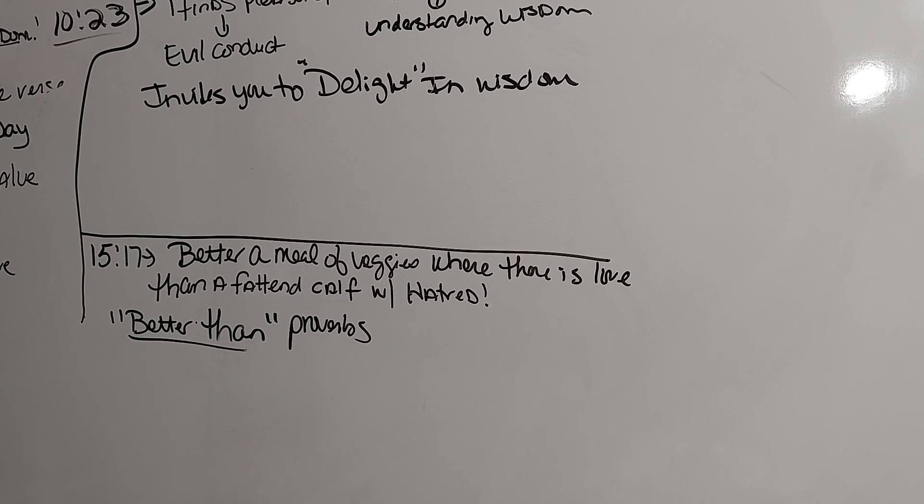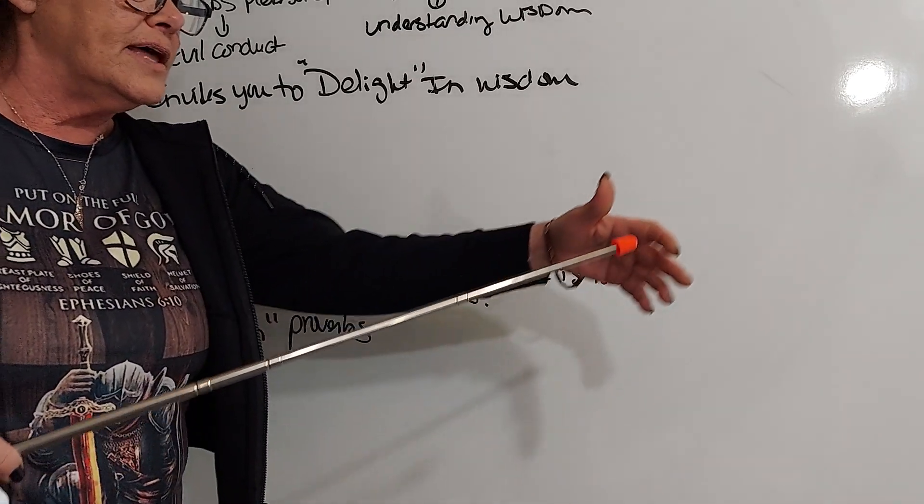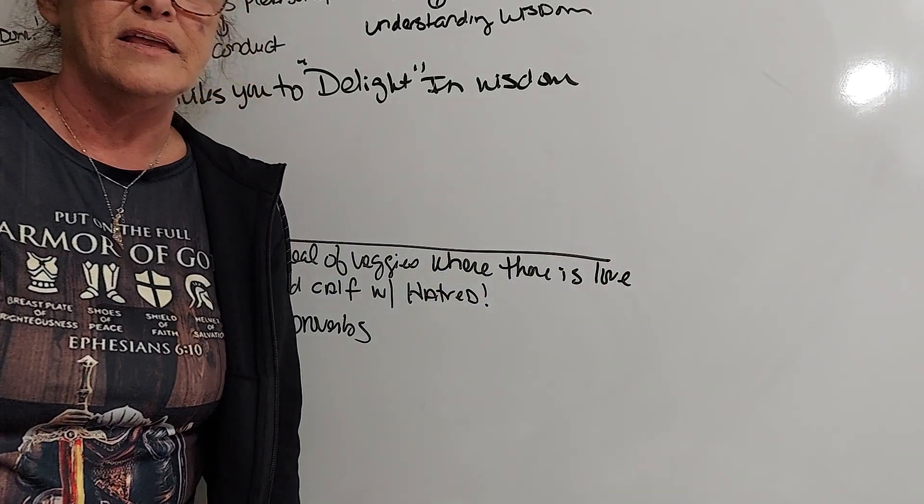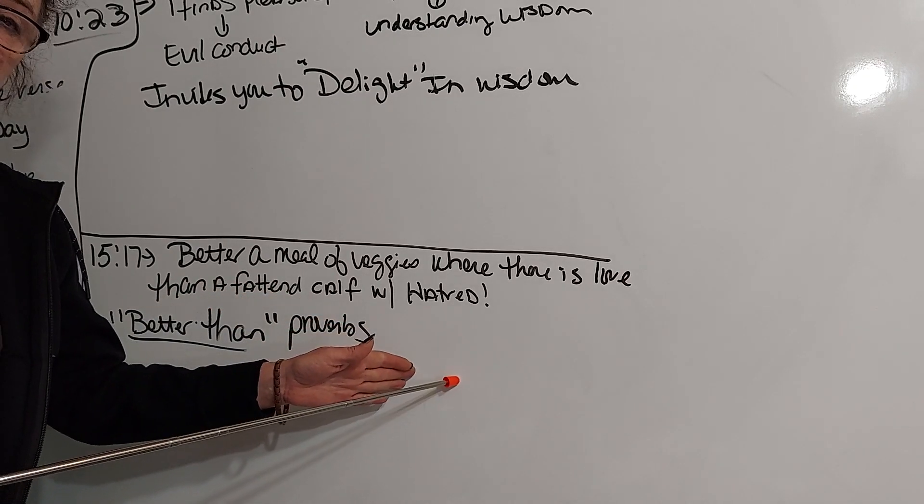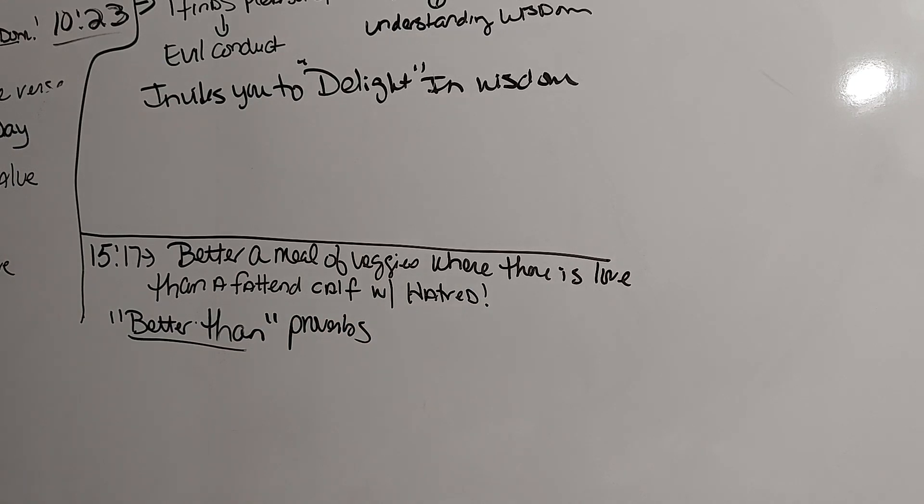In the book of Proverbs, riches can be a blessing from God. But not all riches are desirable. When riches are accompanied by hatred, like people murdering for money and stuff like that, then it leads to destruction. When riches are accompanied by hatred, then poverty with love is preferable. Most people that have murdered somebody for money, right now to this day, wishes they'd never done it, that they could take it all back. Better is a meal of veggies where there is love than a fattened calf with hatred. That fattened calf with hatred is going to, everybody that loves that is going to end up in a place called Sheol. Hell.